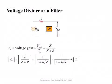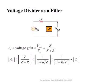Here we have the voltage divider circuit used as a filter. We have a frequency-dependent impedance Z in series with resistance R, and we apply the source between two terminals and pick the output across Z. Voltage division still holds in phasors, so Vout equals Vin multiplied by Z over (Z plus R). This creates what we call a voltage gain — the ratio of output voltage to input voltage.